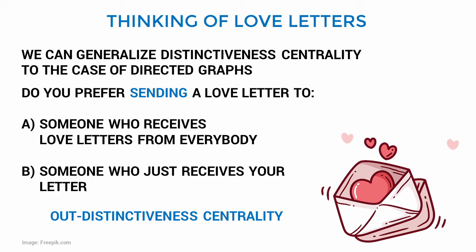If I am a node in a graph, then I consider my outgoing ties more important if they reach nodes with few incoming ties. Otherwise, I send my ties to nodes that receive connections from many other nodes in the network, and my connection is just one out of many.